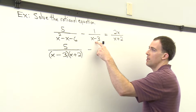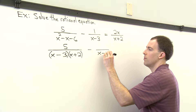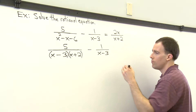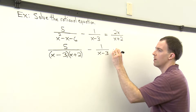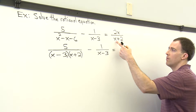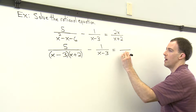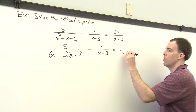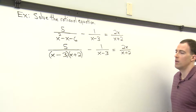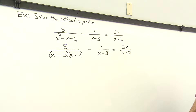The second denominator does not need to be factored — it's not factorable — so let's copy the second term: minus 1 over x minus 3. And the term on the right side of the equation, its denominator cannot be factored either, so we copy that down: 2x over x plus 2. All denominators are factored completely.